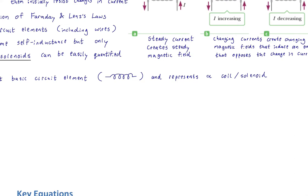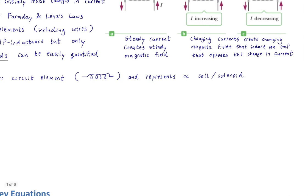The inductor is represented as a coil-like shape in circuit diagrams. We'll have one formula to describe the inductive capabilities of a coil or solenoid — no differentiation between the two here, in contrast to when we talked about the magnetic field created by coils versus solenoids. So there's just one inductor formula.